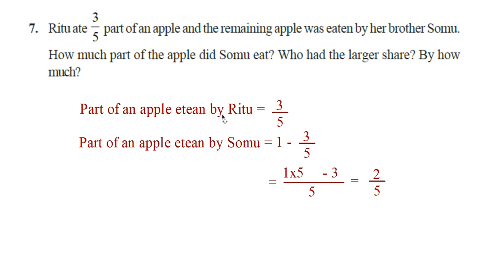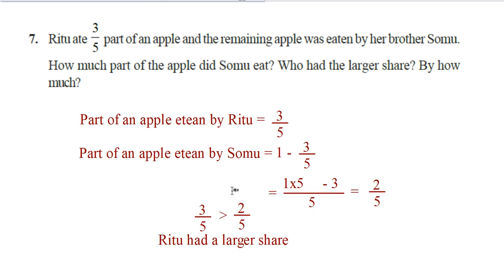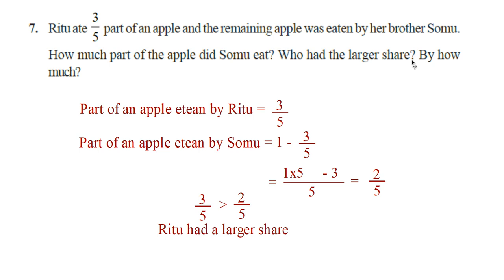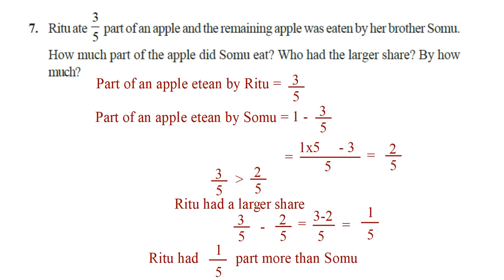Who had the larger share? Ritu got 3/5 part and Sommu got 2/5 part. Clearly 3/5 > 2/5, so Ritu had the larger share. By how much? Subtract: 3/5 − 2/5 = (3 − 2)/5 = 1/5. So Ritu had 1/5 part more than Sommu.